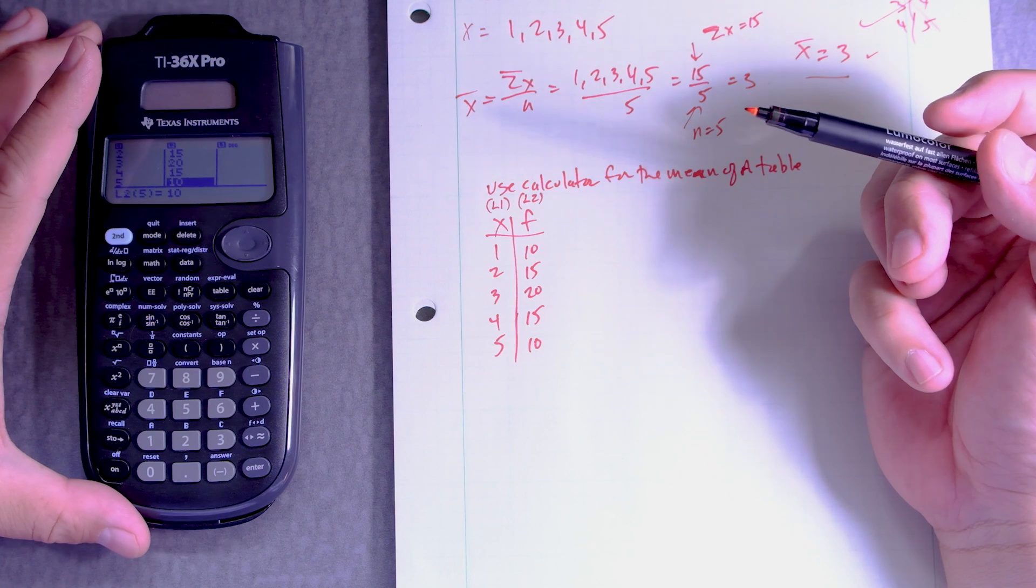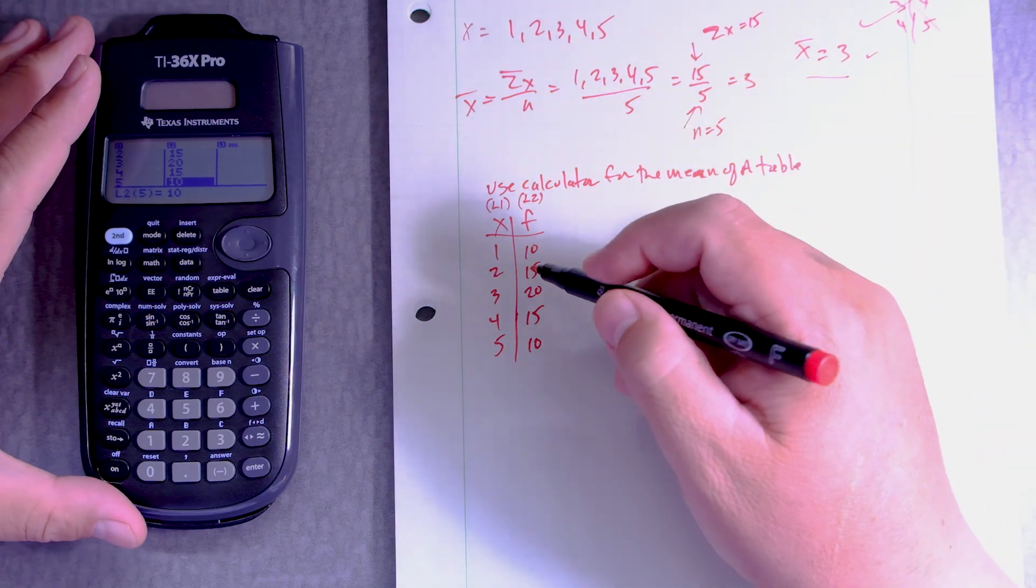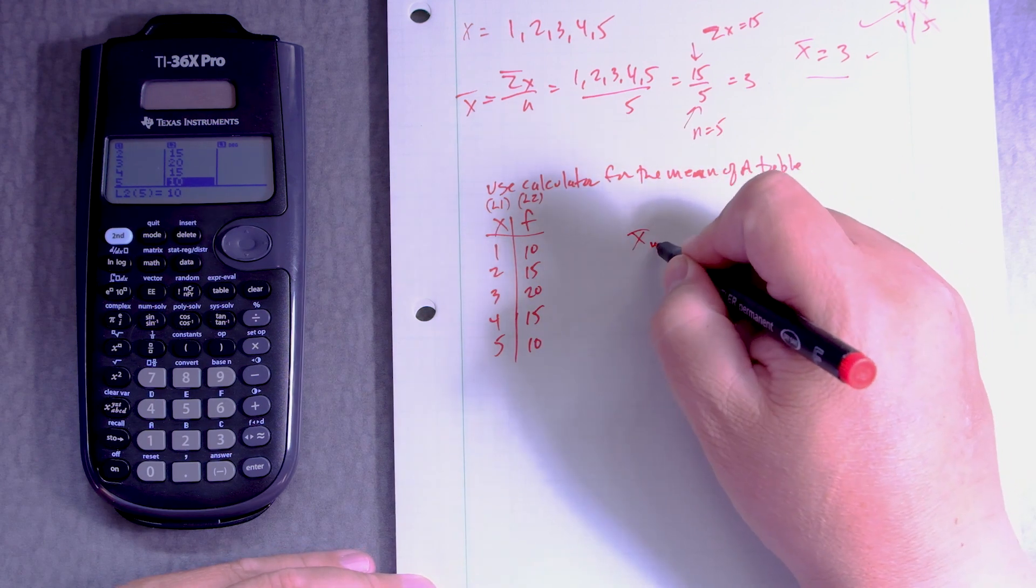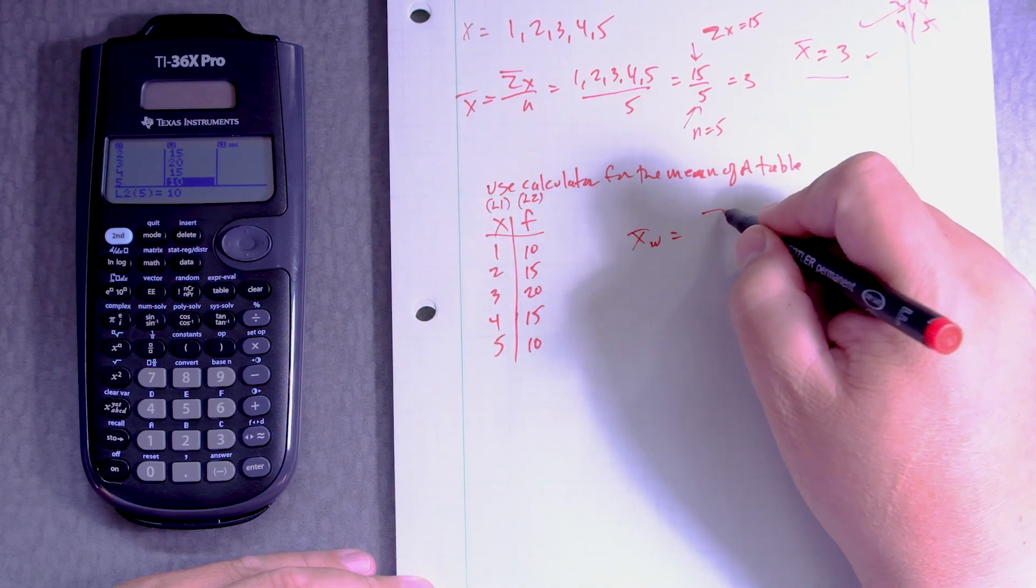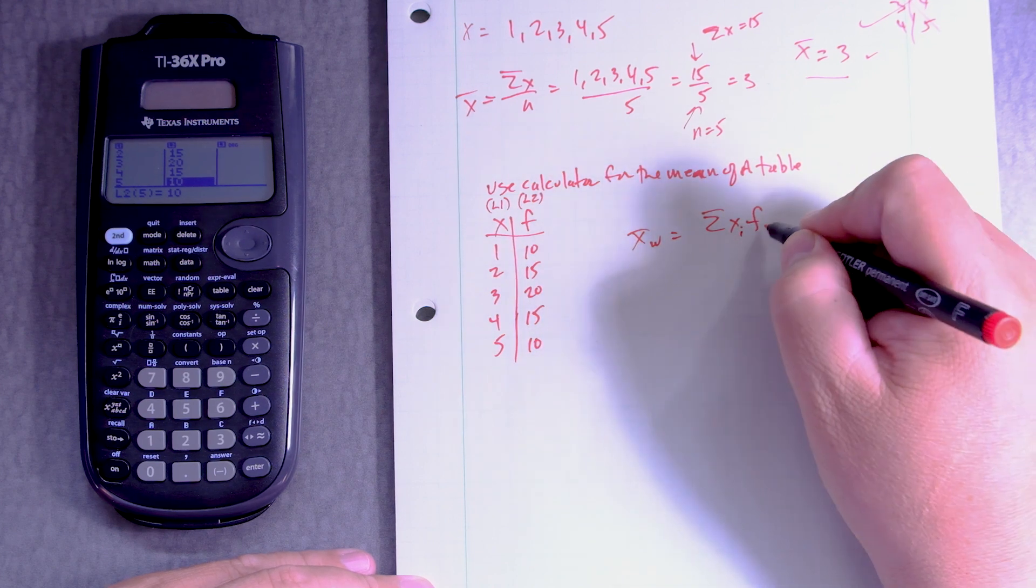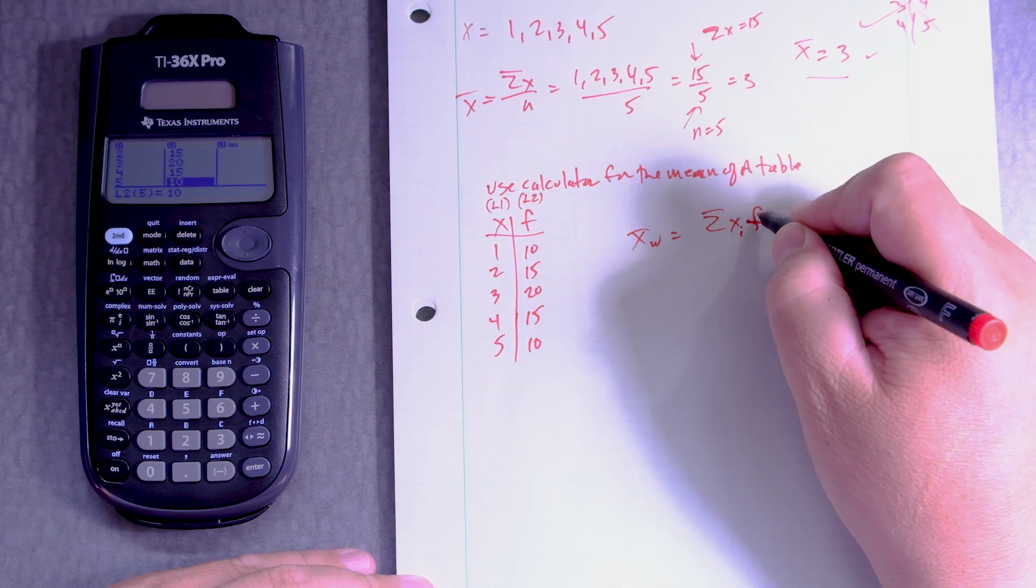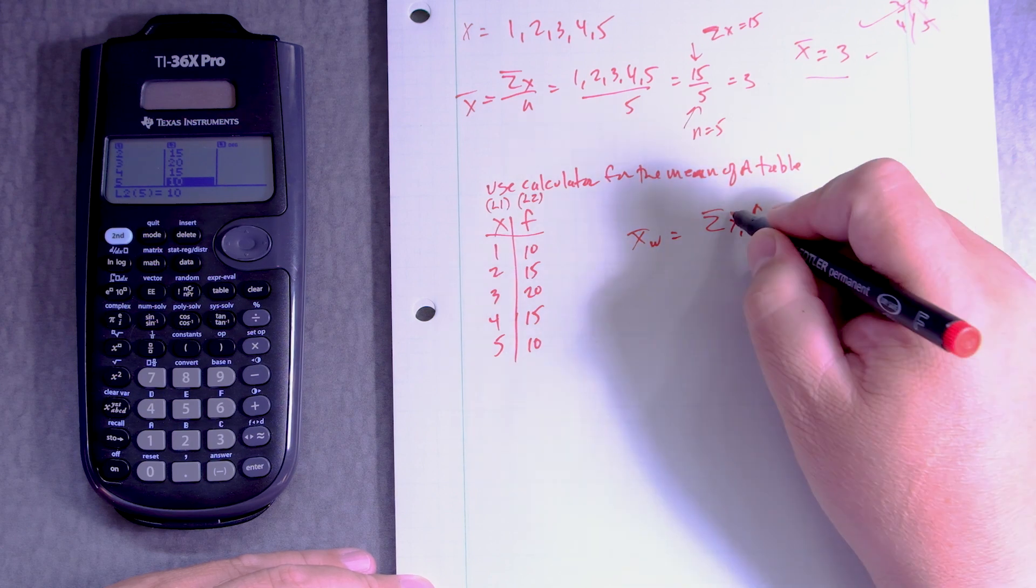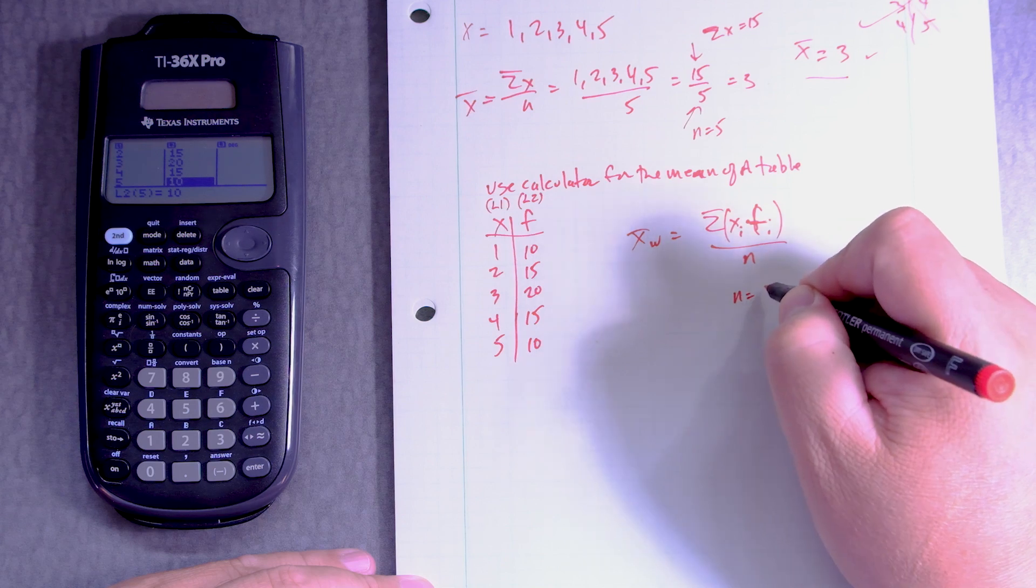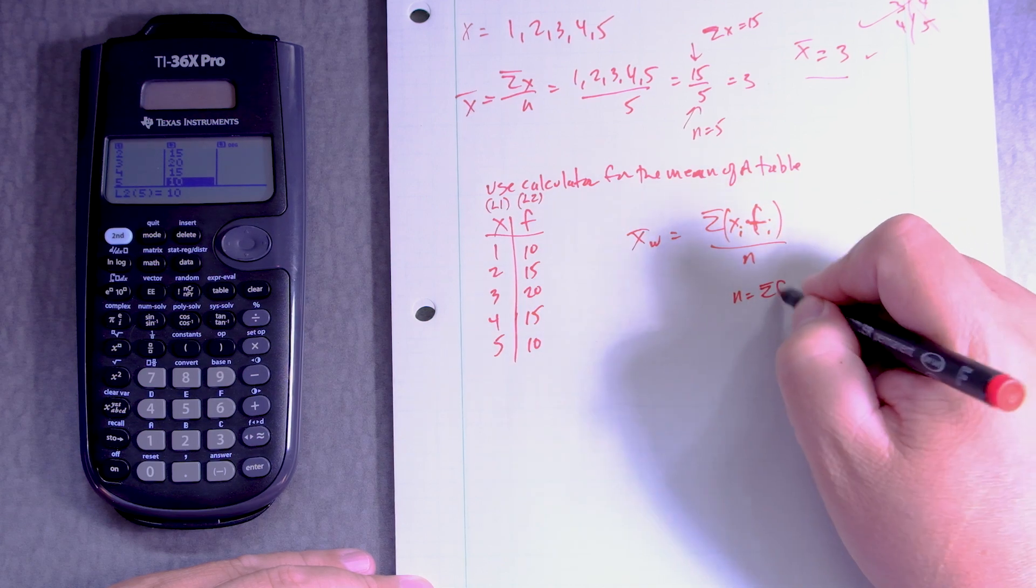Now let's find the mean. Now this one, if you remember, it's more the weighted mean, right? So that's the sum of x times f, or xi times f, the frequency for that value, divided by n where n is the total frequency.